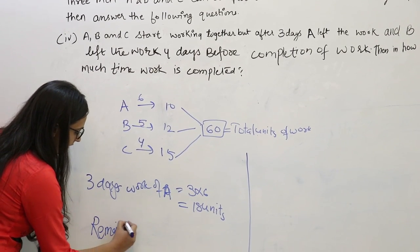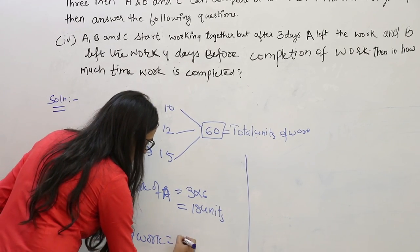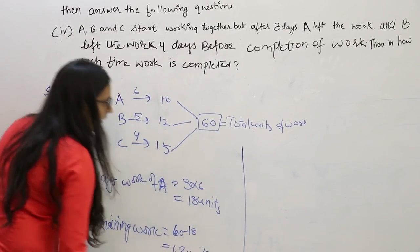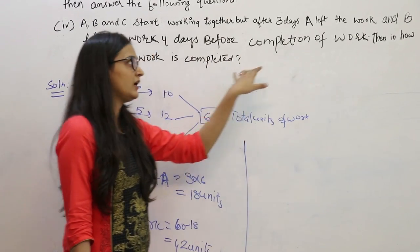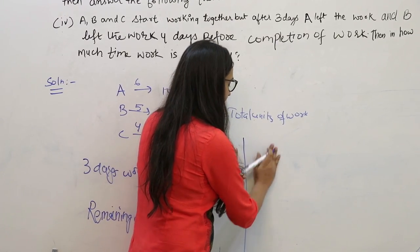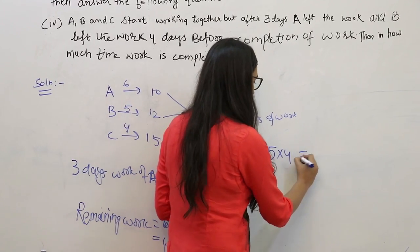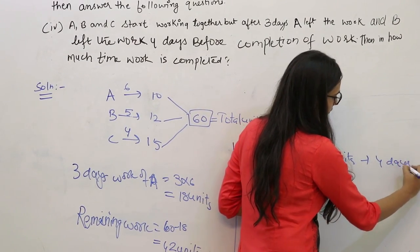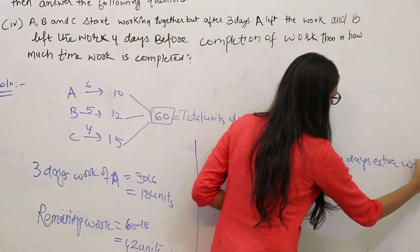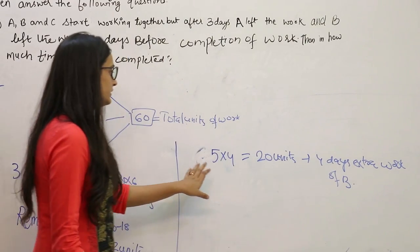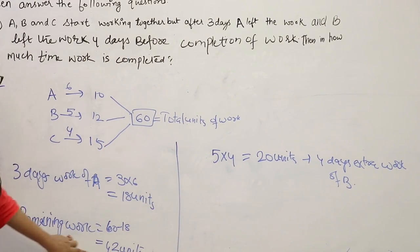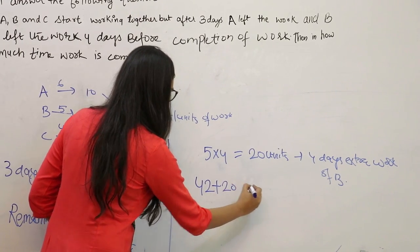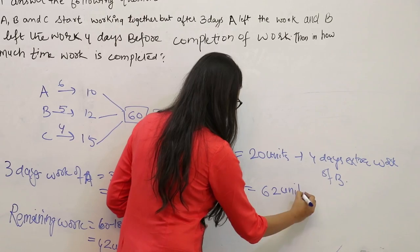First of all, we will find the remaining work: 60 minus 18, that is 42 units. Now we need to make B work 4 extra days. B's efficiency is 5, so we multiply it by 4 to get B's 4-day work. This 4-day extra work of B is added to the remaining work of 42 units, which comes equal to 62 units.